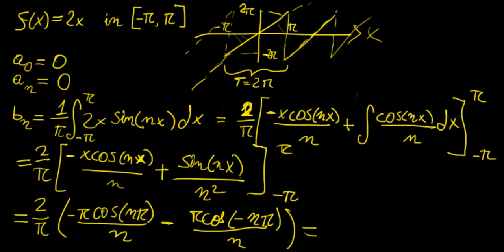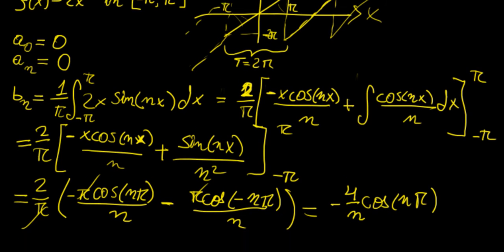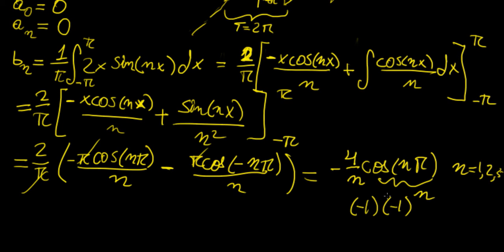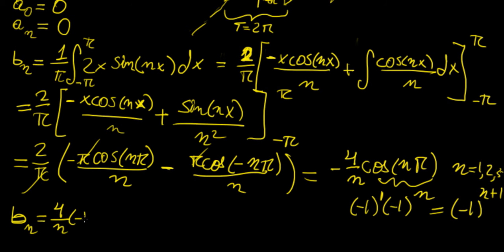Adding those two cosine terms together: since cosine is an even function, cos(-nπ) = cos(nπ), so the two terms combine to give -4/n · cos(nπ). Now, cos(nπ) = (-1)ⁿ for n = 1, 2, 3, … and we have a minus sign in front, so the minus times (-1)ⁿ gives (-1)^(n+1). This means bₙ = 4/n · (-1)^(n+1).